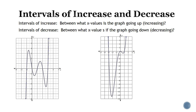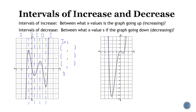Intervals of increase tell you where the graph is increasing and where it's decreasing. I split my graph up using the u-turns as my breaking points and draw some dashed lines. The very first interval is increasing because my graph is going up. Then it switches to decreasing, then increasing, decreasing, and then increasing. So we have three intervals of increase and two intervals of decrease.